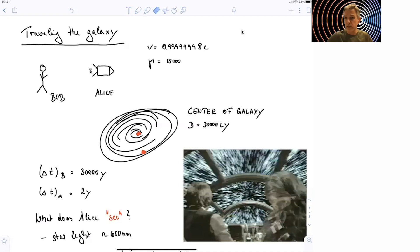Now, the center of the galaxy is about 30,000 light years away. And in Bob's reference frame, this journey will take about 30,000 years, because the velocity is about the speed of light. For Alice, however, the journey will only take two years. So that's quite doable.